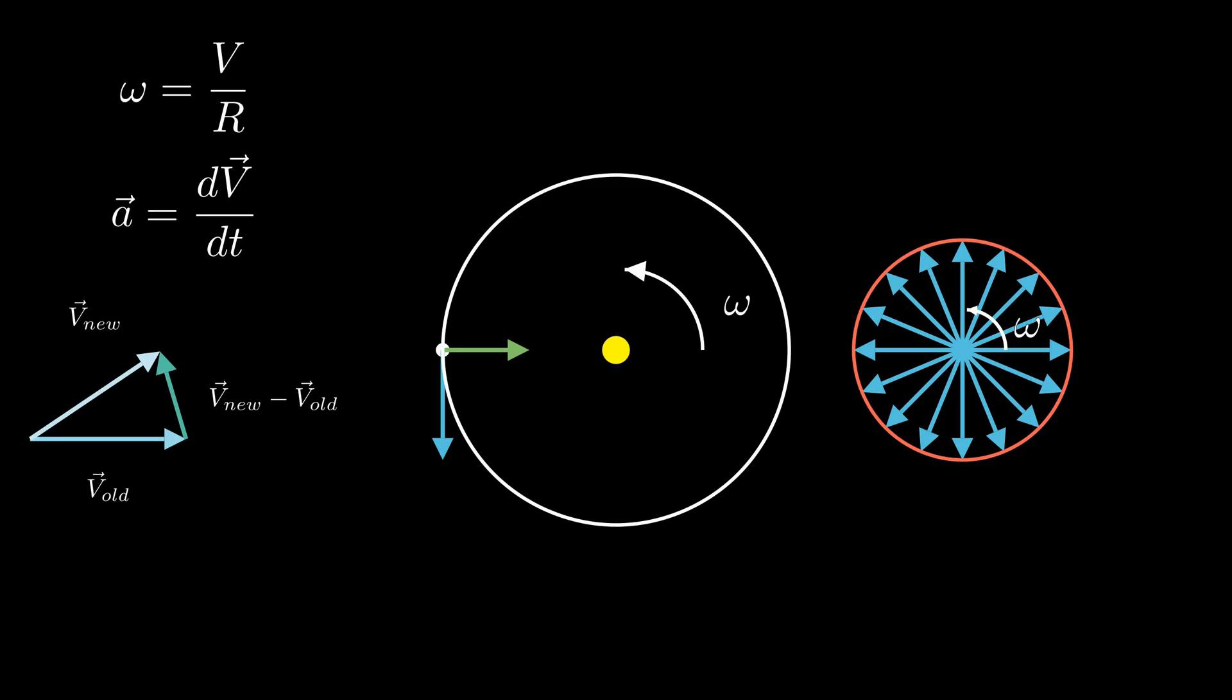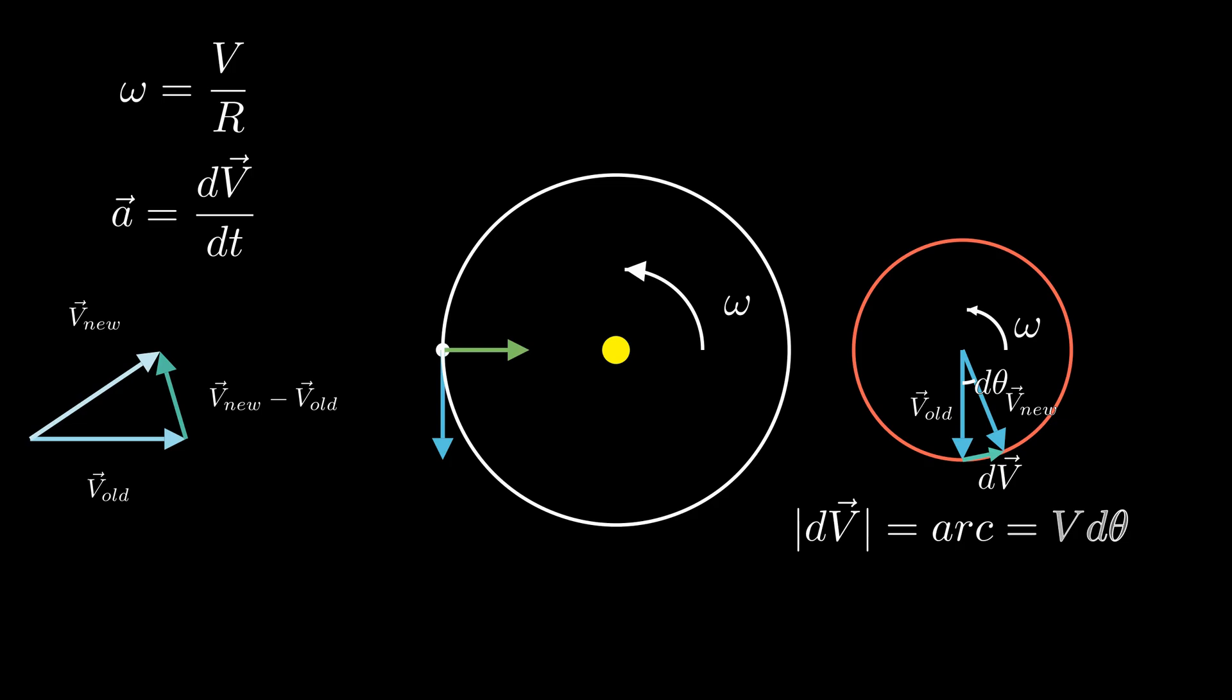Now, if you remember, our goal is to find the acceleration. So, let's start working on the differences between the velocity vectors. For example, we can find the change in velocity after a quarter of a period, like this. Now, let us observe what happens if we work with smaller and smaller time intervals. We may notice that the length of the change in velocity vector is getting closer and closer to the length of the arc. We can draw the following diagram for infinitesimally small amount of time difference. And we can see that, at the very small angle limit, the change in velocity is actually equal to the length of the arc, that is, radius times the angle, which in this case is v times d theta.